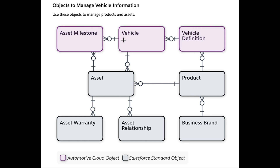The asset warranty refers to the warranty typically from a manufacturer. The asset relationship object captures how an asset — say, a part — may be a replacement part, a substitute, or an upgrade. So, what is the relationship between one asset and another?